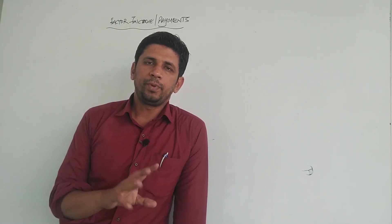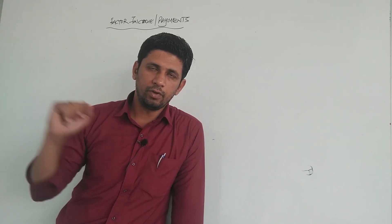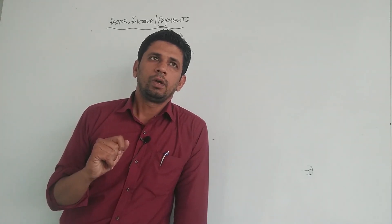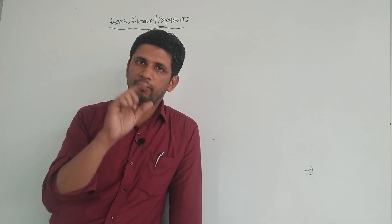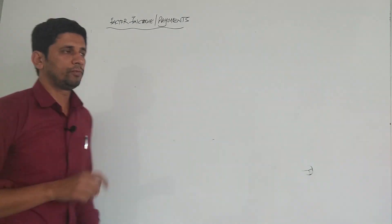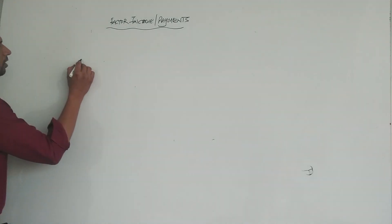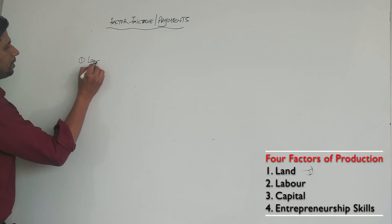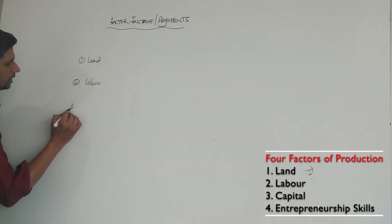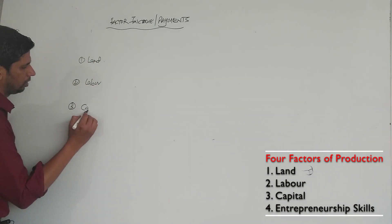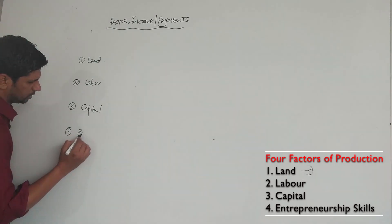In the previous lectures, we discussed that there are basically four factors of production. The first factor of production is land, second is labour, third is capital, and fourth is entrepreneurship skills.